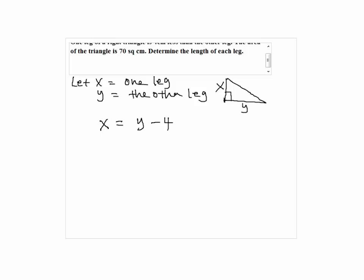Since the area of the triangle is 70 square centimeters, we're going to use the area formula, which is A equals one-half times the base times height, where in this case the base is y and height is x.